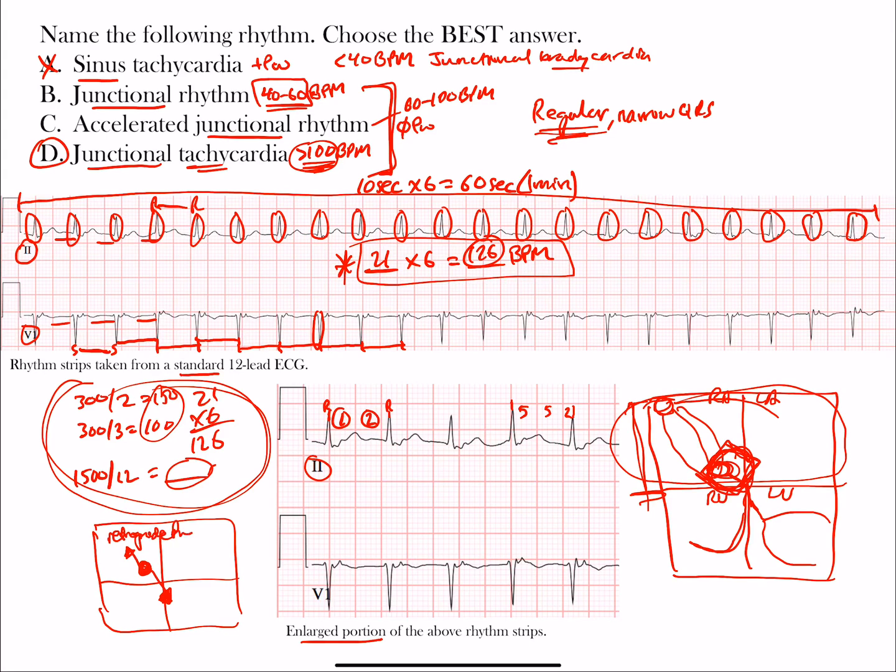You have conduction going antegrade forward to the ventricles and backwards retrograde. That's why sometimes you'll see inverted P waves - these may be retrograde P waves here in lead 2. Because conduction is going down to the ventricles and backwards, it's often buried within our QRS complex and we may not see those P waves.